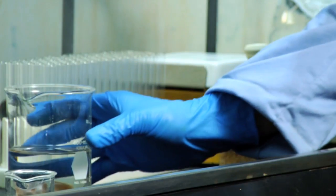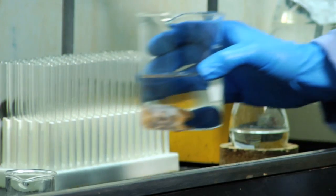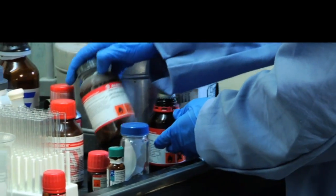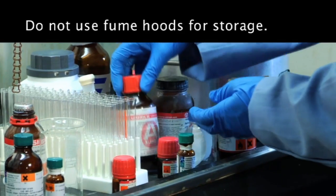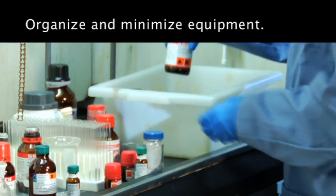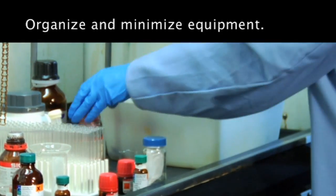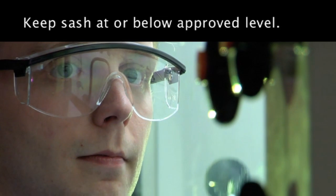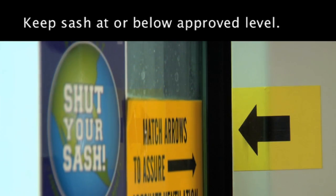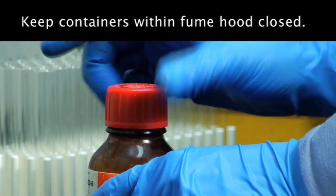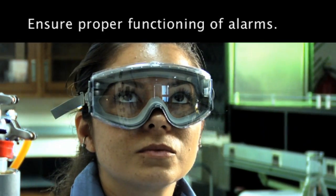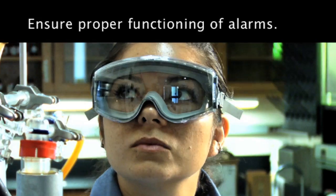To ensure proper functioning, fume hoods must be carefully operated, maintained, and kept free of unnecessary clutter. Do not use fume hoods for storage. Organize and minimize necessary chemicals and equipment. Keep sash at or below approved level. Keep chemical containers within the fume hood closed. Ensure proper functioning of audible and visual alarms.